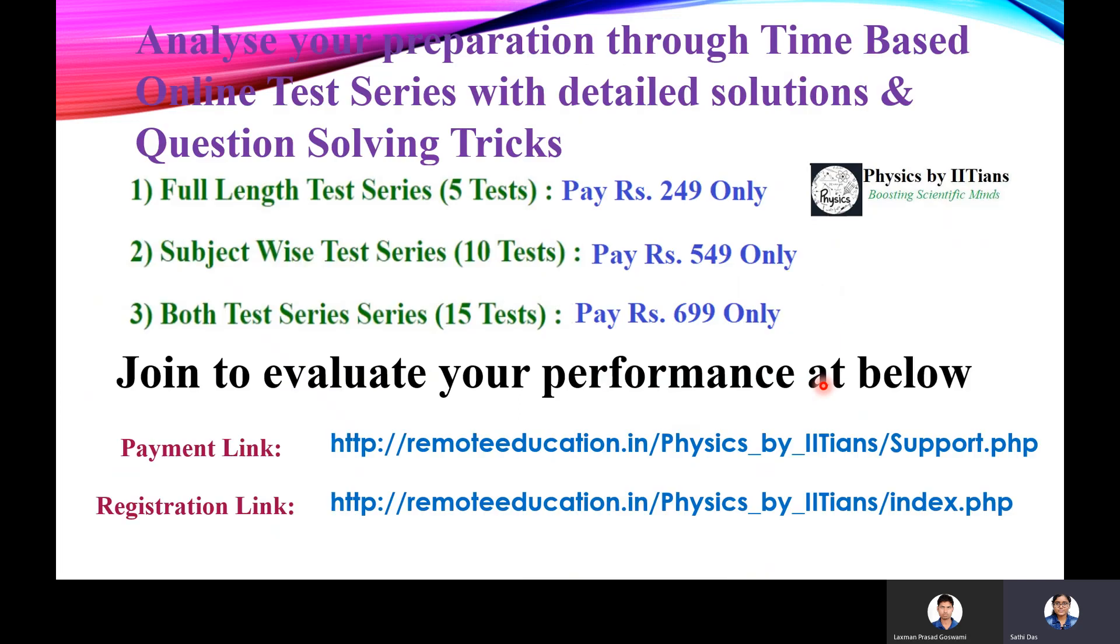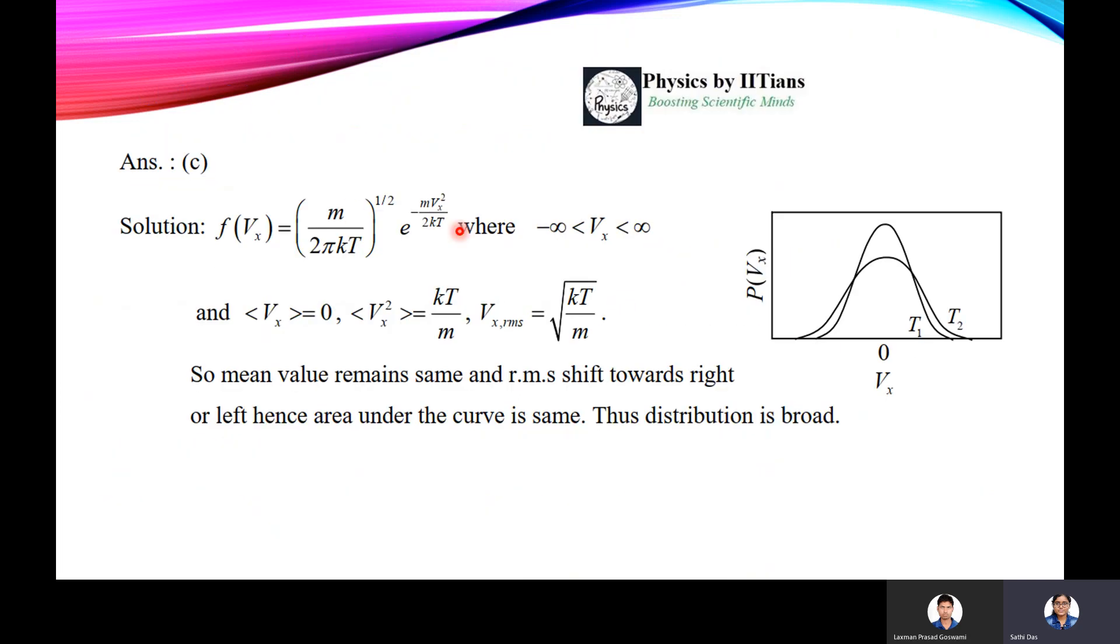So friends, the answer for this question is answer C. Now f of vx, if we write the Maxwell velocity distribution formula, then we can write it as m by 2 pi kT whole to the power half, e to the power minus mvx square by 2kT, where vx lies from minus infinity to plus infinity.